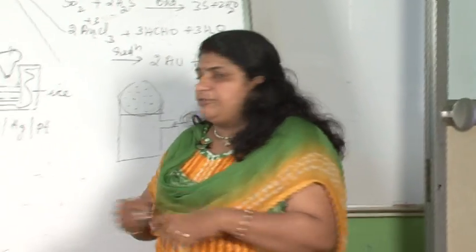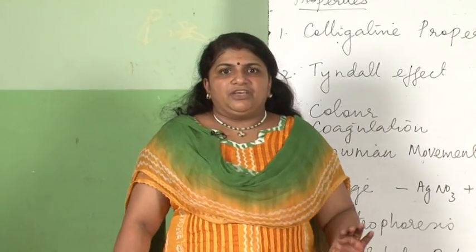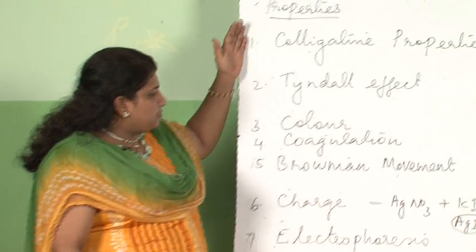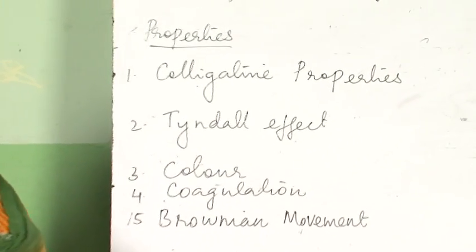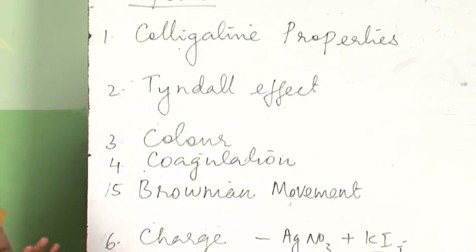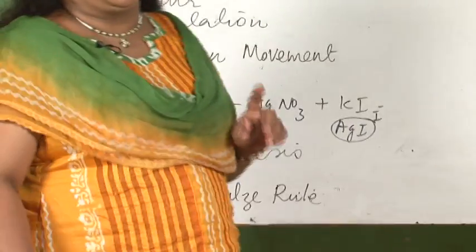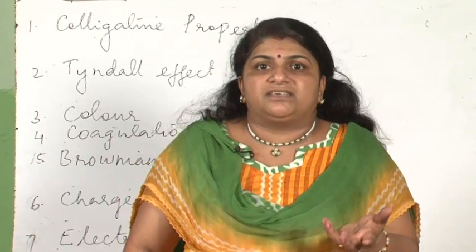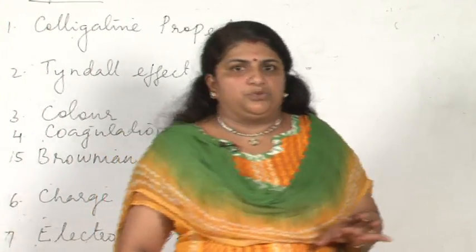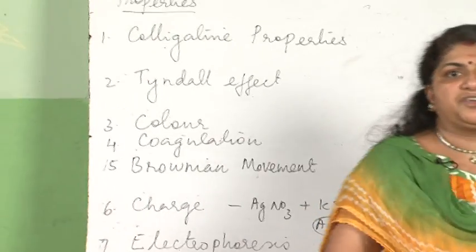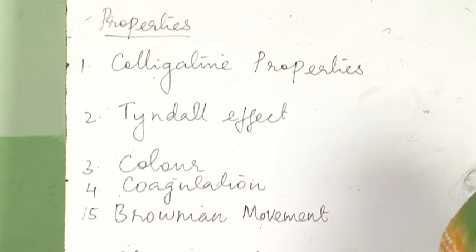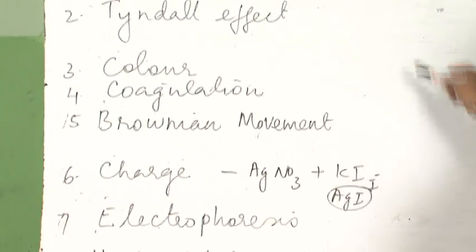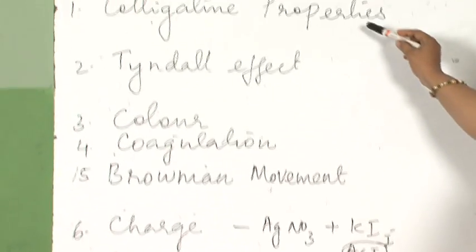That is all about the purification of colloids. Now we are going to discuss the properties of colloids. First, the colligative properties — since the particle size is small, colloids won't show as effective colligative properties as a true solution shows. But they do show some extent of colligative properties such as depression in freezing point, elevation in boiling point, and osmotic pressure — but not to the extent that a true solution shows.